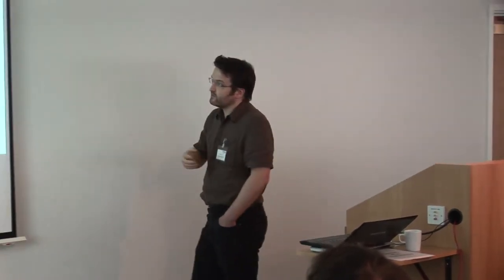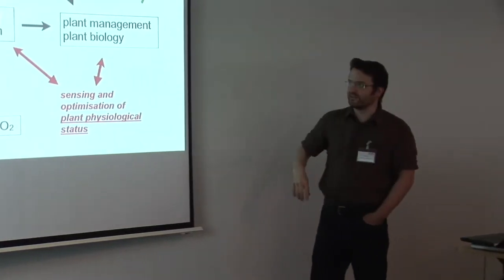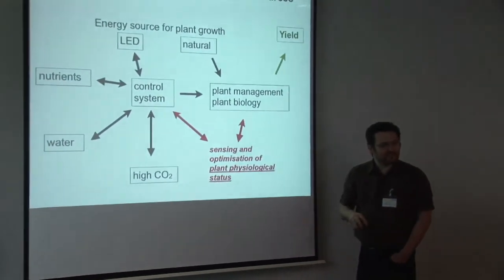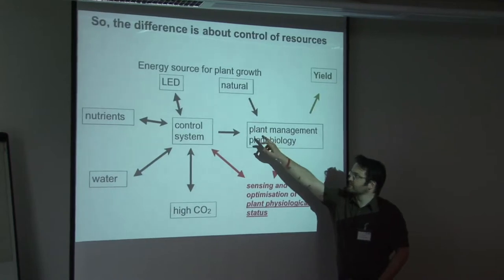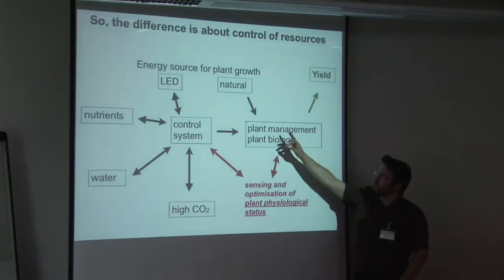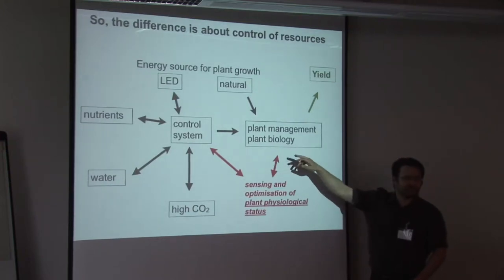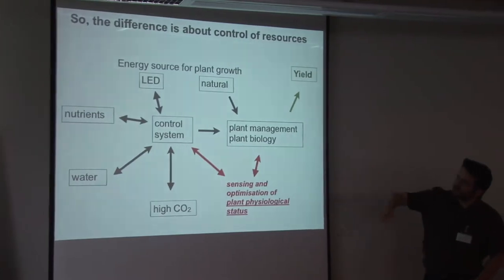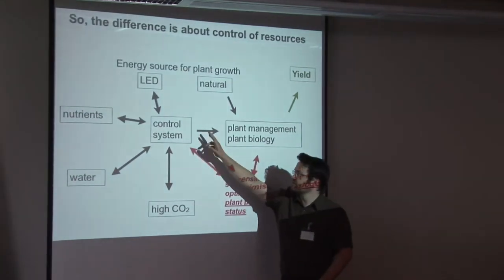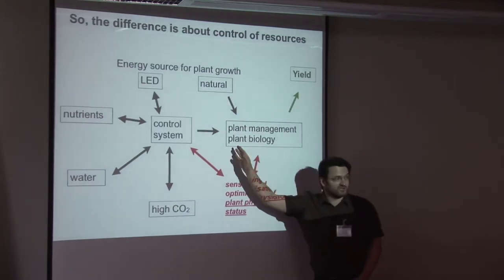Okay, so the difference to me is about control of resources. And if you, I drew this, this is my understanding, basic understanding of how systems might work. So if you're looking at natural light, there's not much you can do in terms of trying to get as much of it onto your property as possible. You've got plant management and plant biology. But if you're controlling the amount of light, as well as controlling CO2, water and nutrients via a control system, you can also provide as much light as the plant needs.